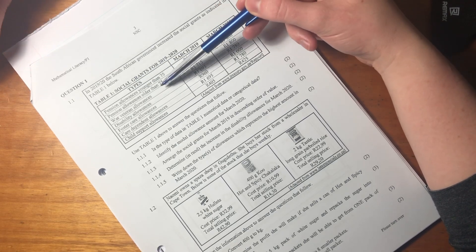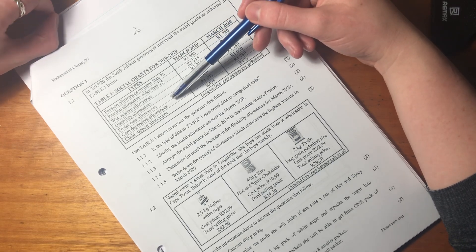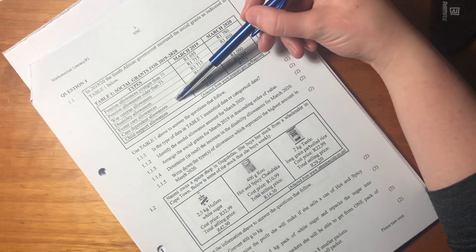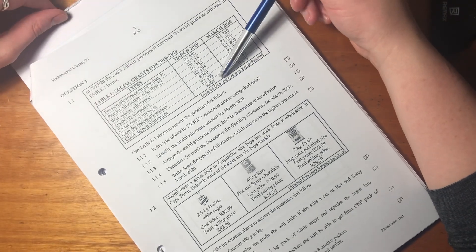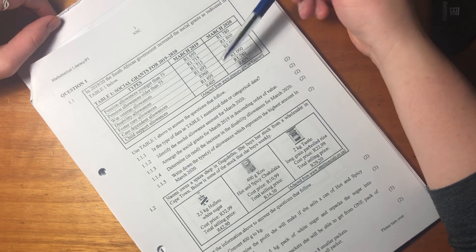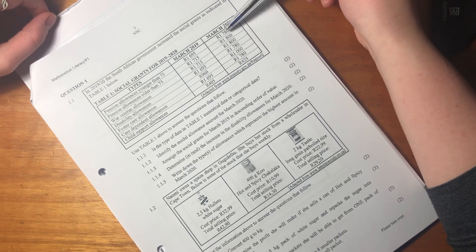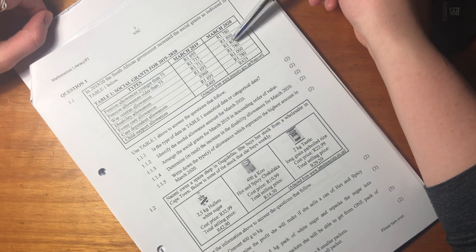The table indicates various categories of social grants: pensioner of different ages, war veteran, someone with a disability, someone who has a child, foster care, care dependent, or child support allowance. There's different amounts allocated to each of these categories with amounts in 2019 and then this amount was increased in 2020 across all categories.